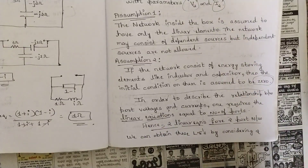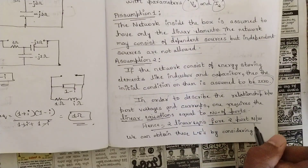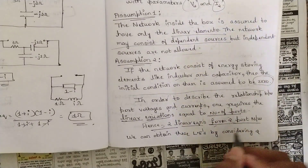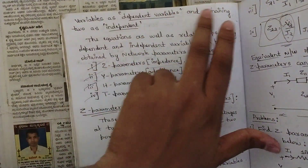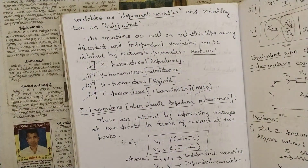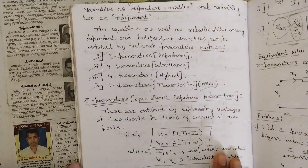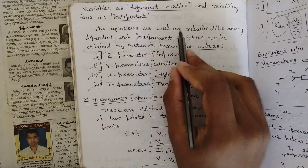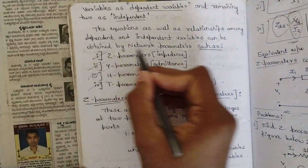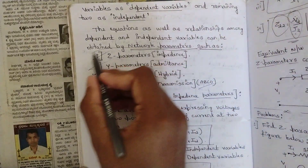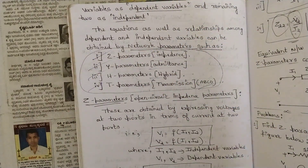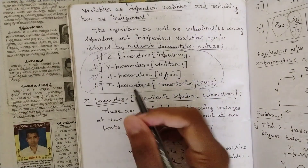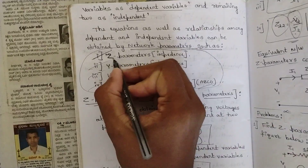In order to describe the relationship between port voltages and currents, we require linear equations equal to the number of ports. Hence, for two-port networks we obtain two linear equations by considering two dependent variables and two independent variables. The equations and relationships among the dependent and independent variables are obtained using network parameters. This whole chapter revolves around four parameters only.